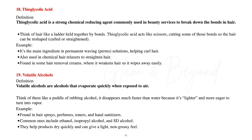Number nineteen: volatile alcohols. Volatile alcohols are alcohols that evaporate quickly when exposed to air. Think of a puddle of rubbing alcohol — it disappears much faster than water because it's lighter and more eager to turn into vapor. They're found in hairsprays, perfumes, toners, and hand sanitizers. Common ones include ethanol, isopropyl alcohol, and SD alcohol. They help products dry quickly and give a light, non-greasy feel.